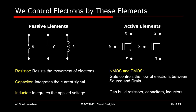These are the elements by which we control electrons: passive elements, which do not require energy to operate, and active elements that require energy. A resistor resists the movement of electrons. A capacitor stores electrons. An inductor integrates the voltage applied to it. And then there are the amazing transistors, NMOS and PMOS, in which the gate voltage controls the current of electrons between source and drain. What is interesting about transistors is that they are tiny and can be used to build resistors, capacitors, and inductors — so all we really need for electronics are transistors.